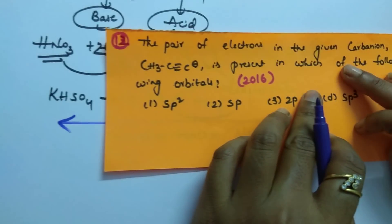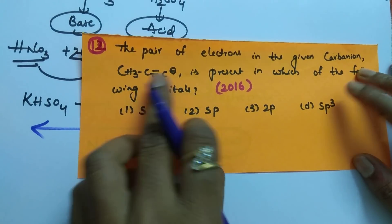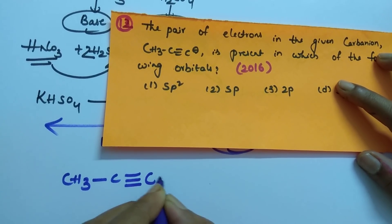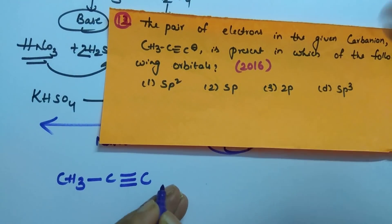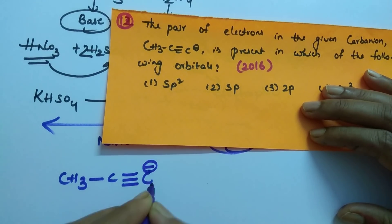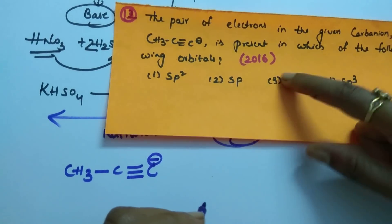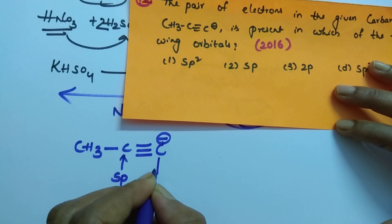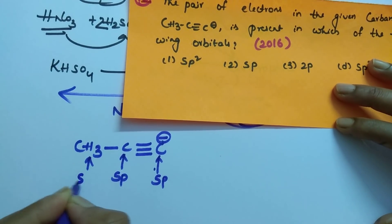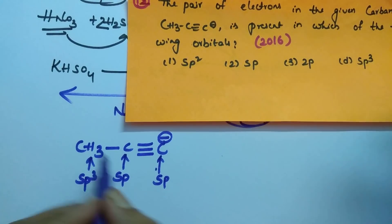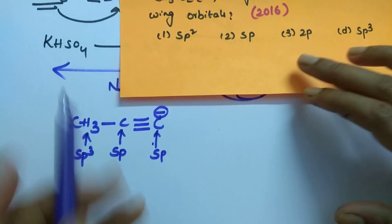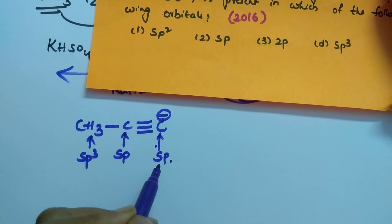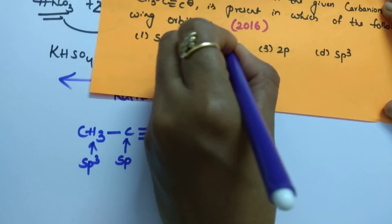And next question. The pair of electrons in the given carbon ion, CH3-C triple bond C minus. CH3C. Here, hydrogen is there. Carbon took those two electrons. Then H goes as H+ and then two electrons is there on this carbon. Is present in which of the following orbitals? See here. If triple bond is there, means which carbon? This is sp. This triple bonded carbon is sp. And this is which carbon? sp3 carbon. All are single bonds sp3. Triple bond is there sp. So, here, lone pair, sorry, pair of electrons are present on which carbon? sp carbon. sp hybrid orbitals. So, second option is your correct answer.